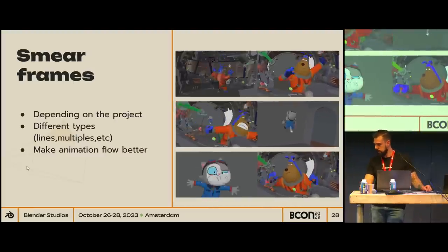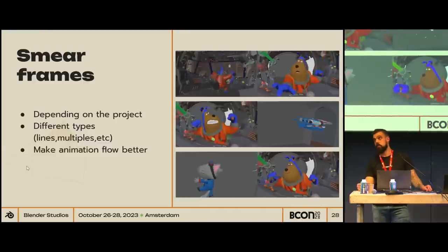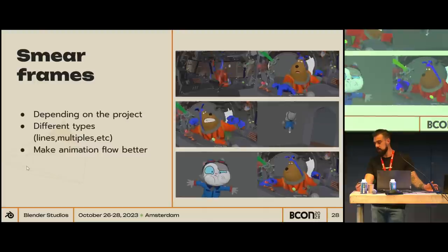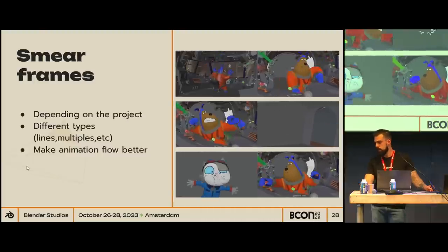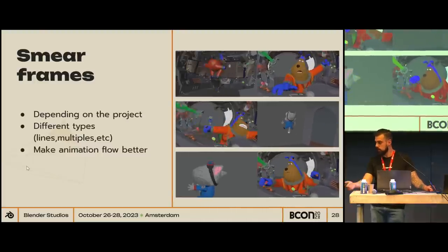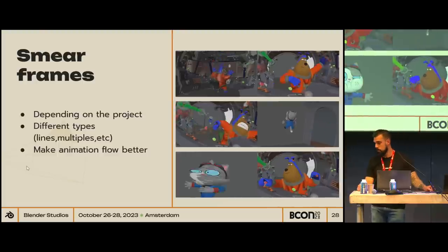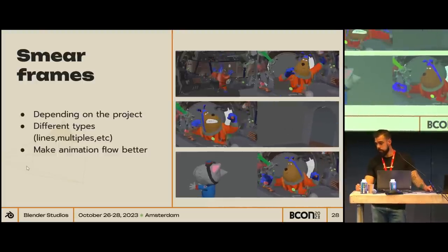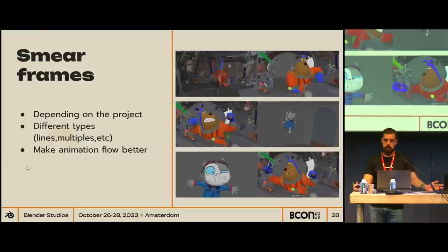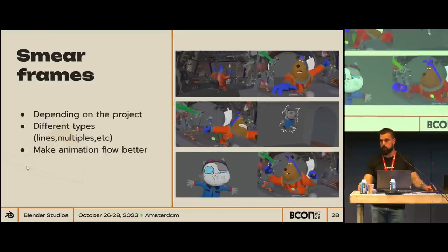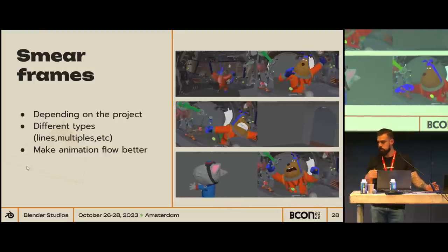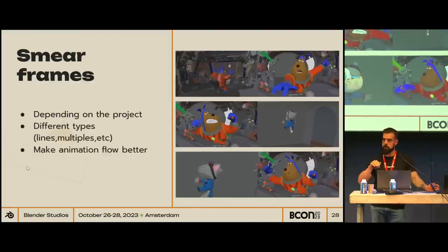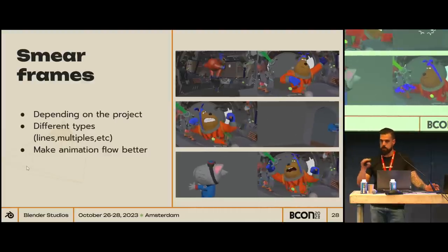Smear frames. The smear frames depend on the project — if you have something hyper-realistic, you don't do them. If you have something funny like Wing It, you can go as crazy as you want. You have different types of smear frames: they can be lines, multiples, blobs, or shapes. But the main idea is making your animation flow better between fast poses.